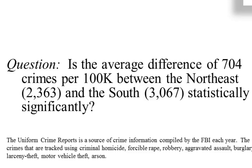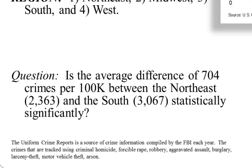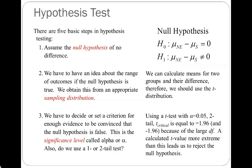The question is whether that difference of approximately 704 crimes per 100,000 is statistically significant, or likely due to our sample of counties. Step one: our null hypothesis is that there's no difference in crime rate between the Northeast and the South — mu sub NE minus mu sub S equals zero. I'm doing a two-tailed test, so my alternative hypothesis is that mu sub NE minus mu sub S is not equal to zero. A one-tailed test would replace 'not equal to' with greater than or less than.